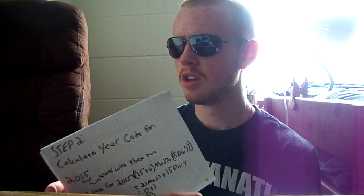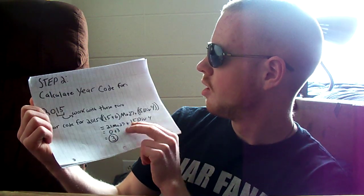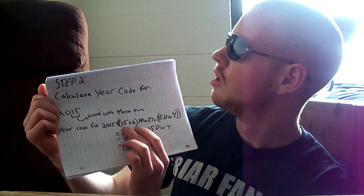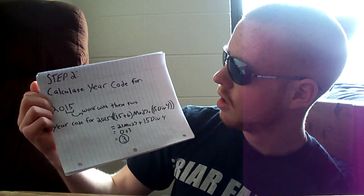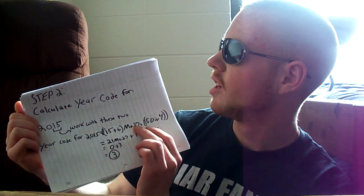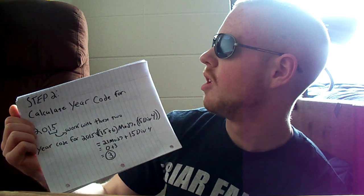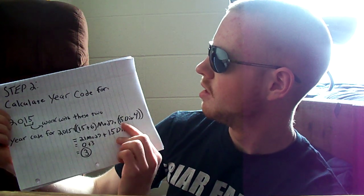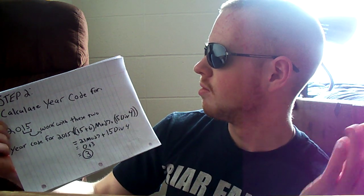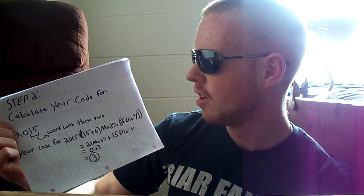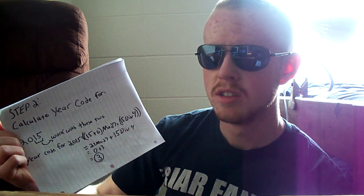Now you know those things. To find the year code, which we're going to use later on, you take the last two digits of the year that you're working with, and you do: those digits plus the century code, mod 7. So 15 plus 6 is 21, mod 7 equals zero — it goes away. Then you also add 15 div 4, which would be 3, because 4 times 3 is 12, and adding one more 4 gives 16 which exceeds 15. So that's step 2 done.